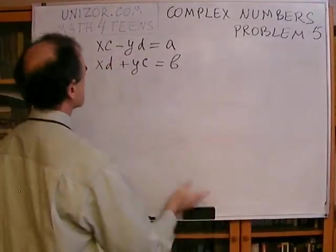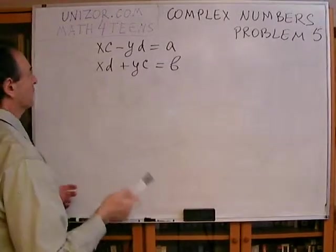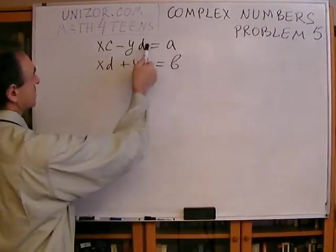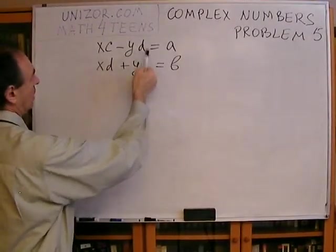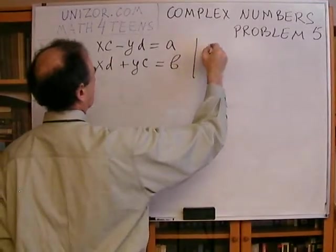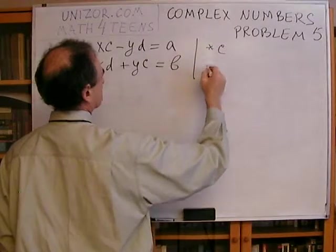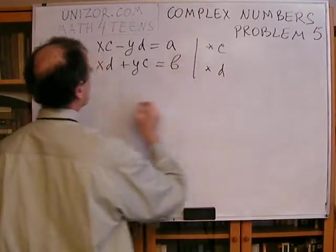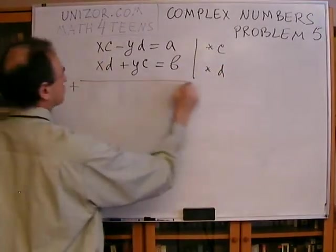Well, with linear equations it's quite simple. Let's say you multiply this by C and this by D, and add them up, what happens? So, this would be multiplied by C, this would be multiplied by D, and then we will add them up together.